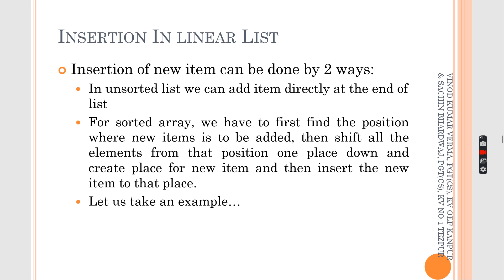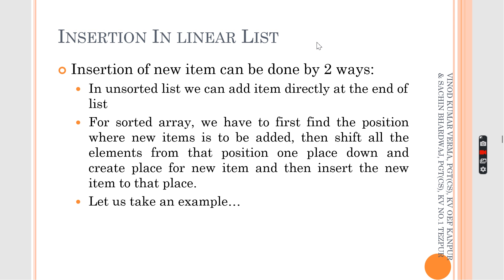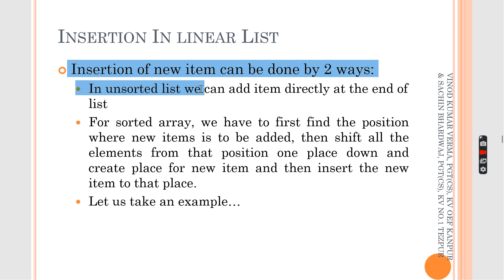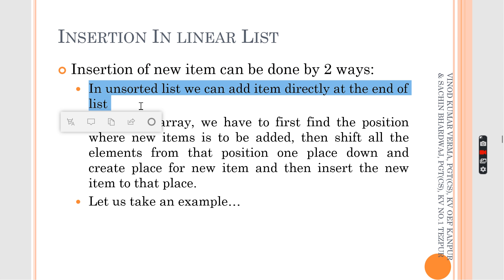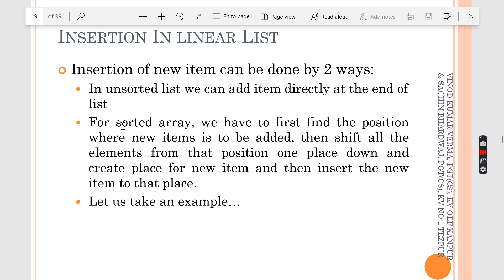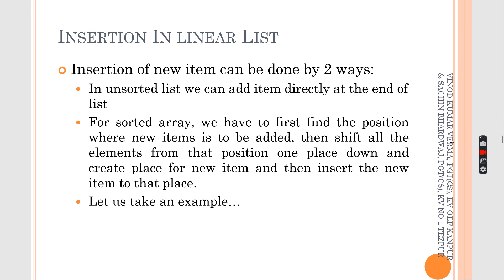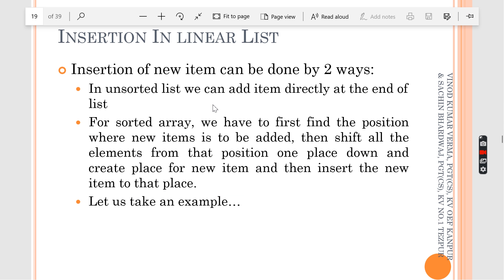One dimensional array. Now, insertion of any number element in this particular linear list. Linear means line — only one dimensional array, that is what a linear list. If you are going to insert any particular new item, it can be done by two ways. One is unsorted list. If you want to add any item to an unsorted list, the item will be added at the end of the list.